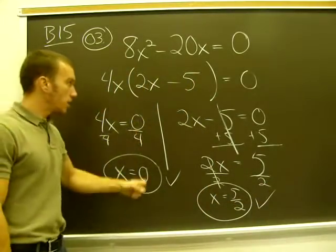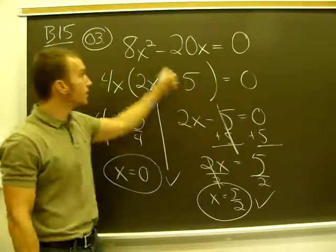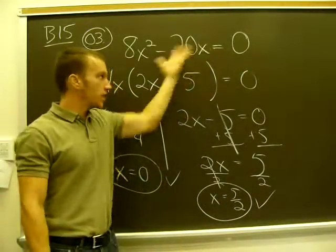Go back to the original equation. Plug in a zero here, you get a solution. Plug in 5 halves here, do the work, do the arithmetic, and you should get zero.